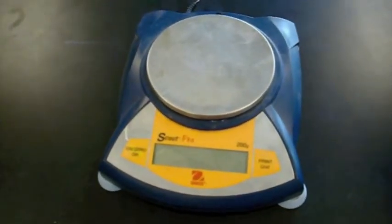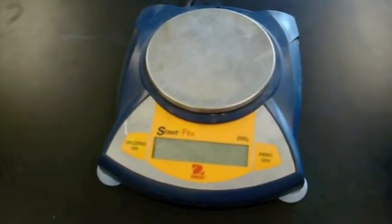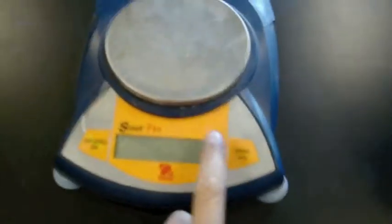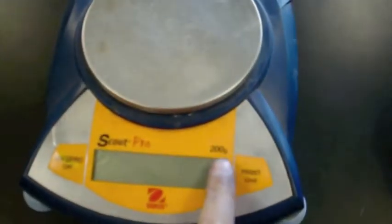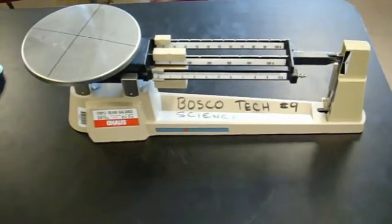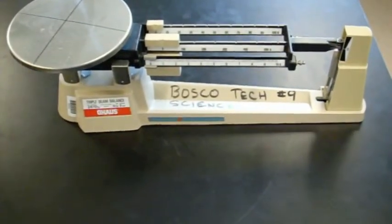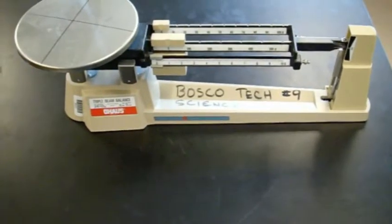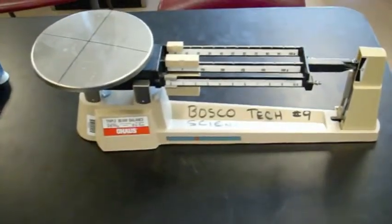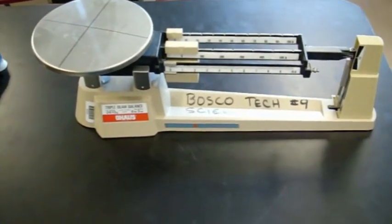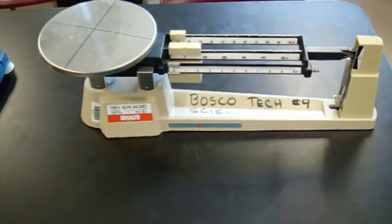Each of these balances has their own advantages and disadvantages. Just briefly, the electronic balance is more accurate than the triple beam balance, but it has a maximum capacity of 200 grams. So if we need to measure something more than 200 grams, we'll have to go over to the triple beam balance. The triple beam balance can measure up to several kilograms with some accessory weights. As it's configured now, it can measure up to about 610 grams.